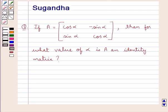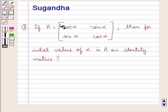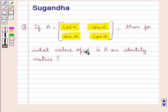Hello and welcome to the session. In this session we discuss the following question: if A is equal to the matrix with elements cos alpha, minus sin alpha, sin alpha, cos alpha, then for what value of alpha is A an identity matrix?